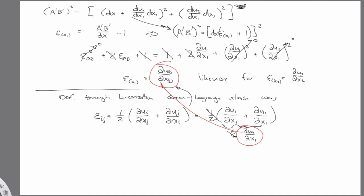And the reason we chose it is for consistency with the linear theory. Because if we didn't have that one-half in there, this would be two partial u1 partial x1.